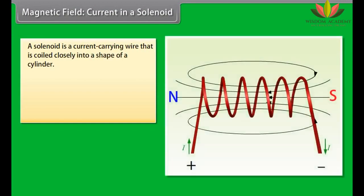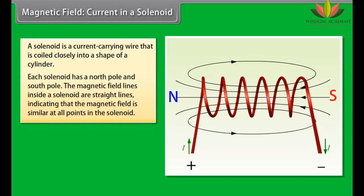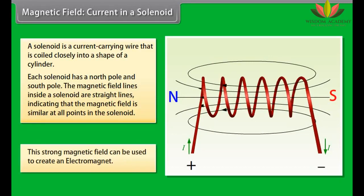Magnetic field current in a solenoid. A solenoid is a current carrying wire that is coiled closely into a shape of a cylinder with the turns as close together as possible. This is similar to a bar magnet. Each solenoid has a north pole and south pole. The magnetic field lines inside a solenoid are straight lines and indicate that the magnetic field is similar at all points in the solenoid. This strong magnetic field in the solenoid can be used to magnetize magnetic materials. This type of a magnet is called an electromagnet.